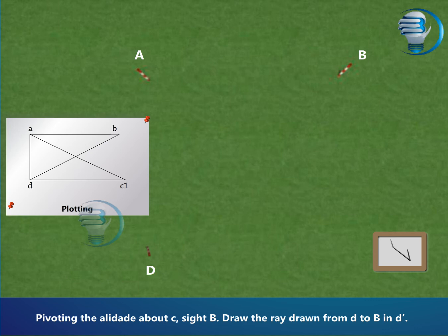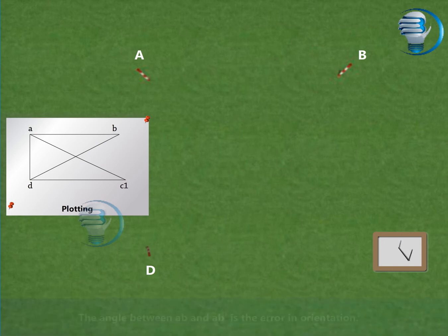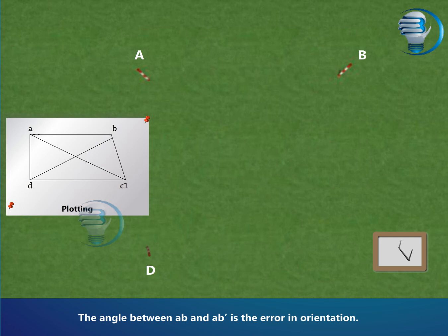Pivoting the alidate about c, site B. Draw the ray from d to B at d'. The angle between ab and ab' is the error in orientation.